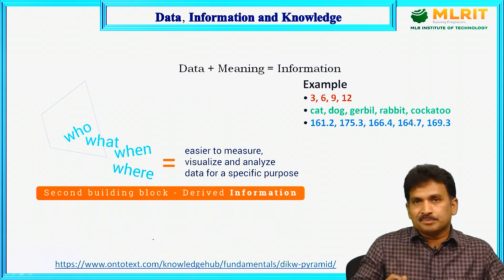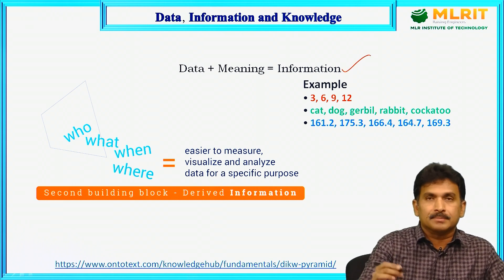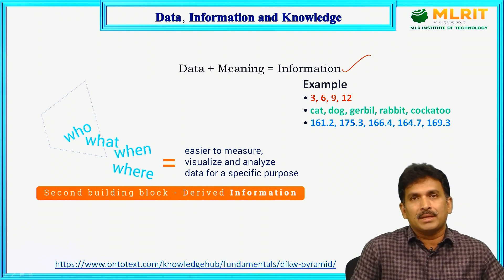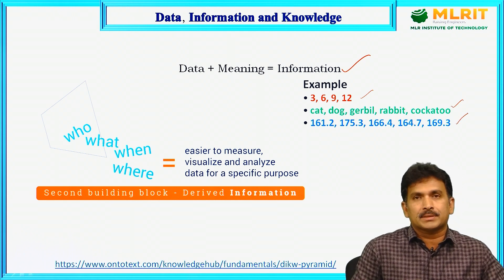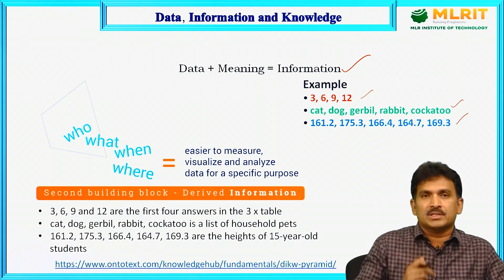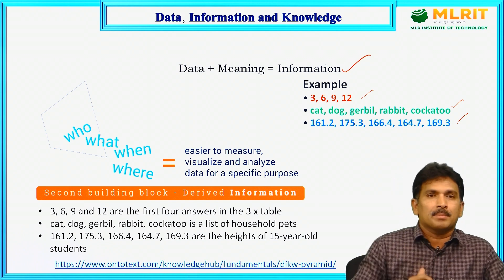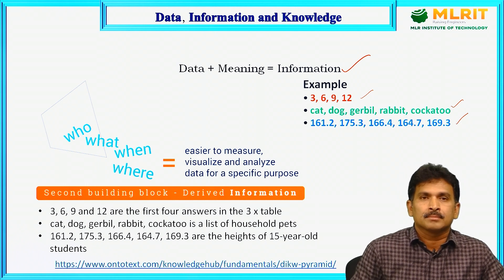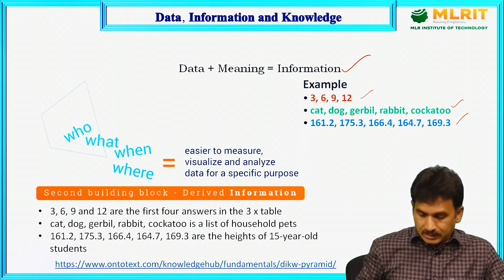Then, information. If you put information into the equation, it would look like this: data plus meaning becomes information. Using the same example as the previous slide, those numbers and text — if we say 3, 6, 9 and 12 are the first 4 answers in the 3 times table, the cat, dog, gerbil, rabbit and coccato is a list of household pets, and the floating values are the heights of 15-year-old students — that is information.